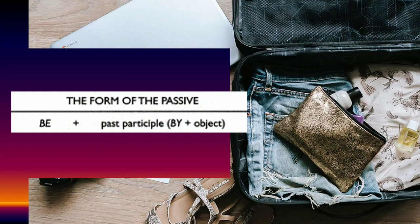I have to emphasize that the form of the passive is to be plus past participle. Past participle is verb 3. And then there is 'by + object,' which is optional — it can be used or omitted and the sentence is still correct.